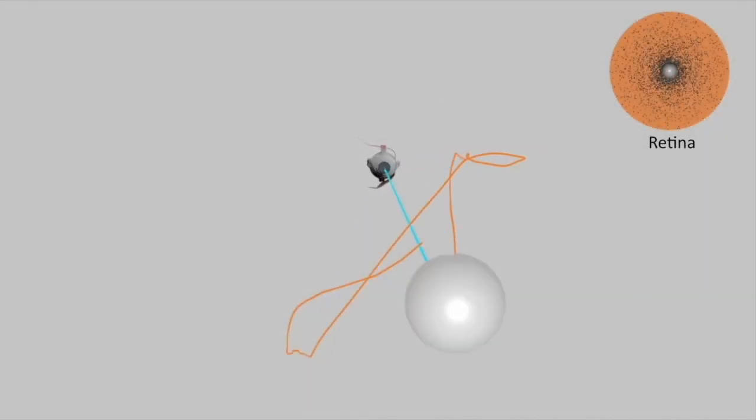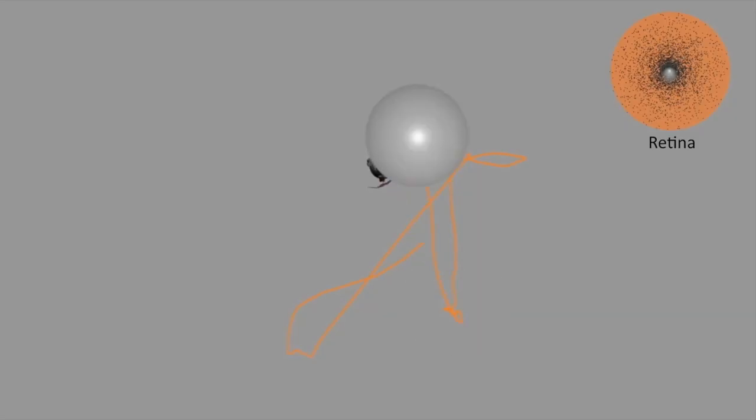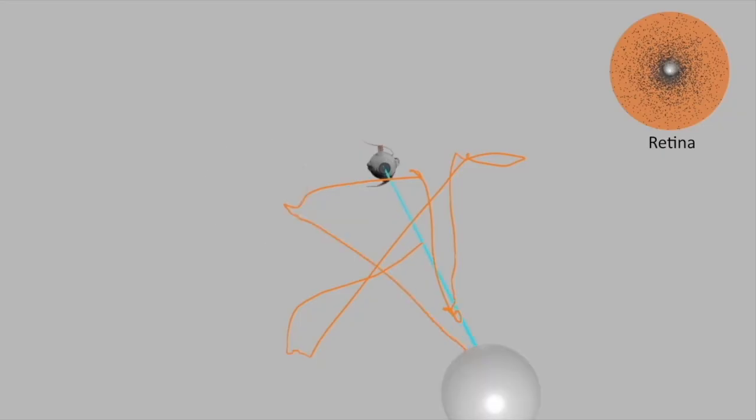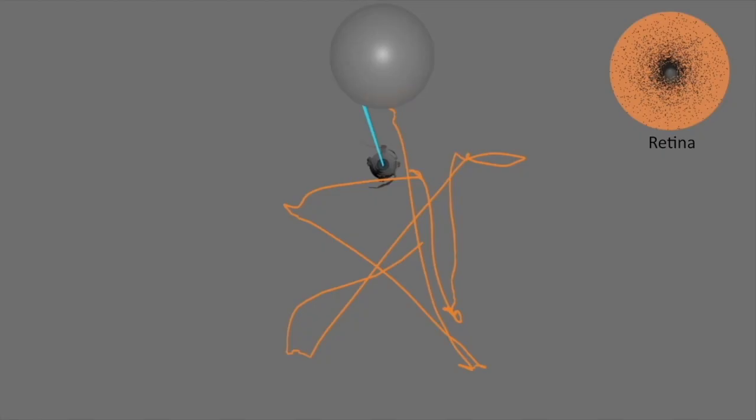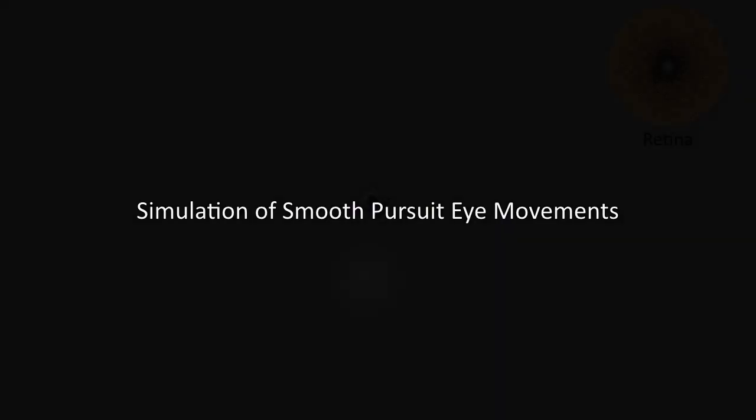We next demonstrate full visual motor control in a variety of simulations. In this saccadic eye movement simulation, the eye rotates to fixate a randomly repositioning visual target under changing illuminations. The orange trace illustrates the noise inherent to biological eye movements.